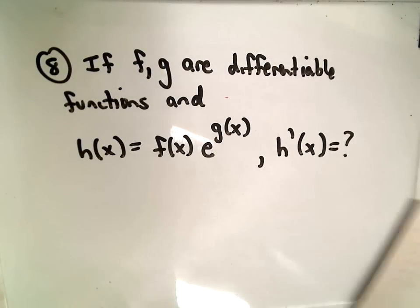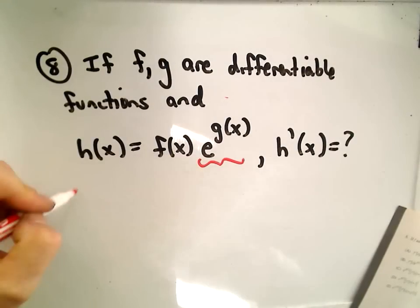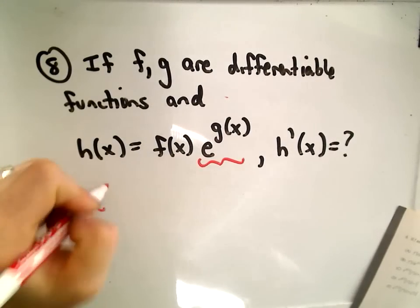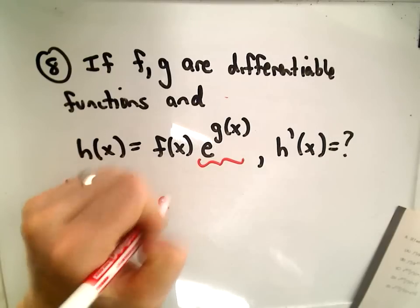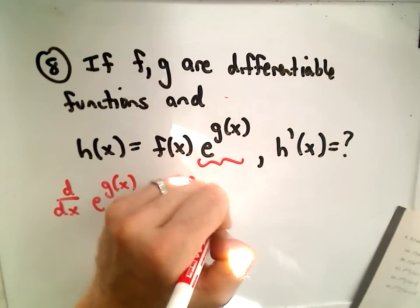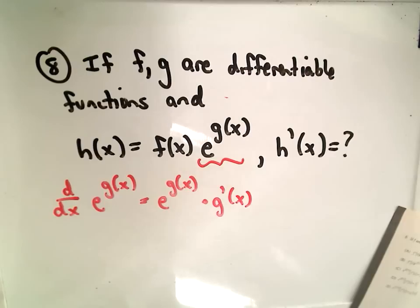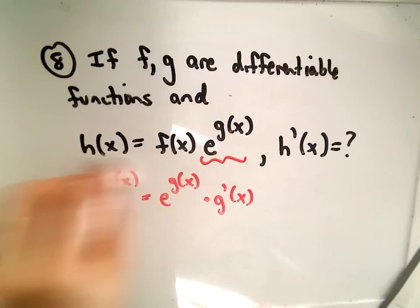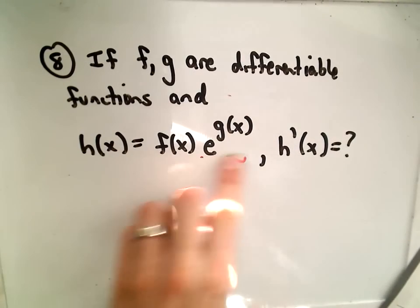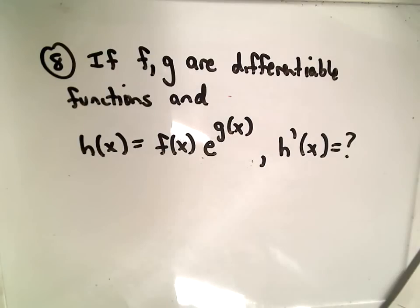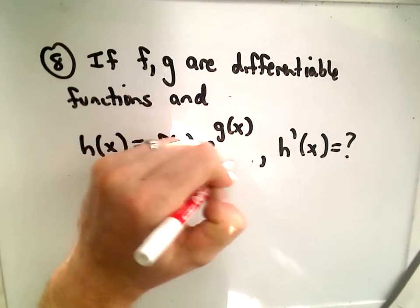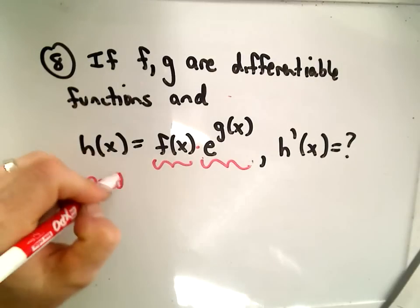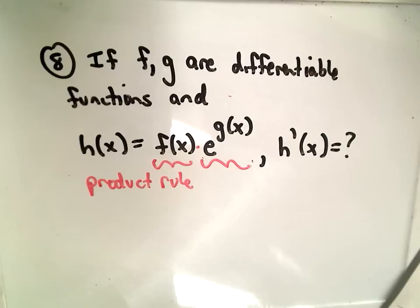We're trying to find the derivative. The only thing you have to remember is the derivative of e to some function: we get e to the function, and then we multiply by the derivative of the function. The other thing to remember is that we have a product of two functions — f of x times e to the g of x — so we'll also have to use the product rule.